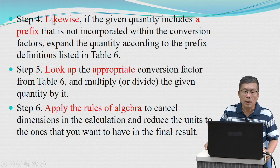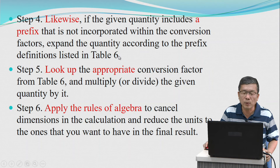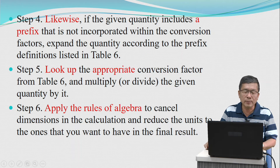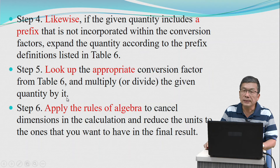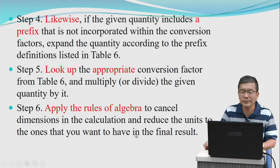Step four: likewise, if the given quantity includes a prefix that is not incorporated within the conversion factor, expand the quantity according to the prefix definition shown in the table. Step five: look up the appropriate conversion factor from the table and multiply or divide the given quantity by it. Step six: apply the rules of algebra to cancel dimensions in the calculation and reduce the units to the ones you want in the final result.